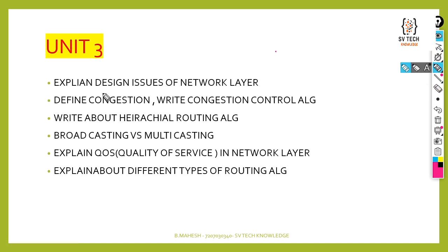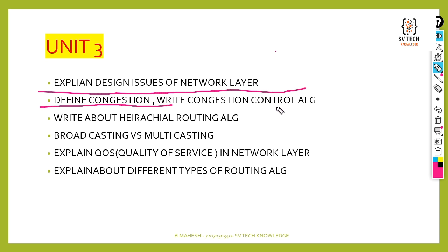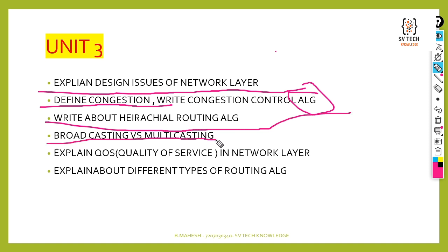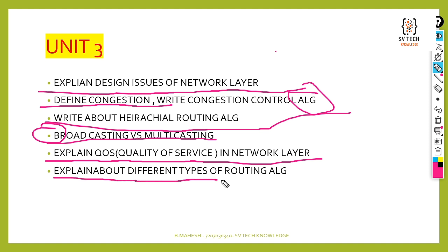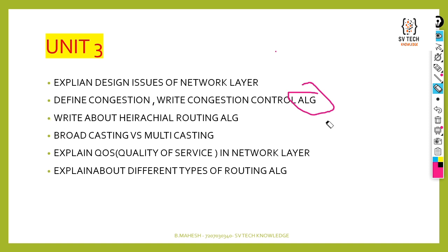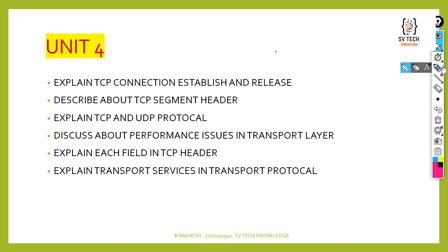Moving to the third unit: explain design issues of the network layer. Next: define and explain the congestion control algorithm — this algorithm is very important. Next: write about hierarchical routing. Next: broadcasting versus multicasting — a very important question. Next: explain QoS (quality of service) in the network layer. Next: explain different types of routing algorithms. These are six important questions from the third unit.